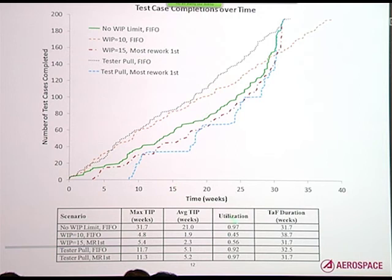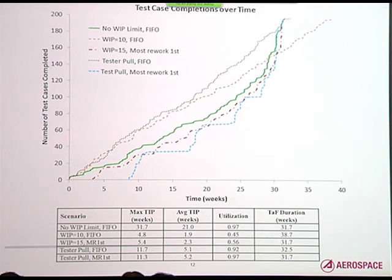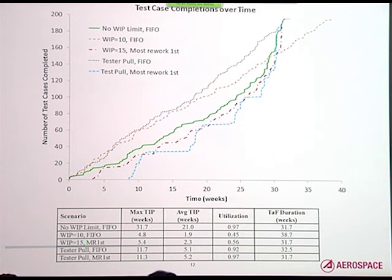To distinguish between cases, it's helpful to look at the utilization figures and the time in process — how long does a test case spend in the whole process? If we're trying to learn from our early test cases about the system and its behavior, we want a short time in process, which would leave out the no-WIP-limit FIFO case. Generally, the tester pool cases are pretty good, and the FIFO case is probably the most desirable for most situations.